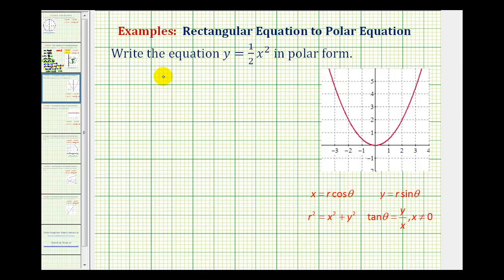So if we start with y equals one-half x squared, we'll have to perform a substitution for both y and x. Well, x is equal to r cosine theta, and y is equal to r sine theta. So we can substitute r sine theta for y, and we can substitute r cosine theta for x.